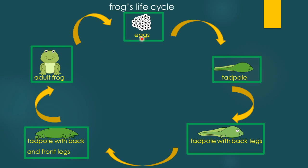So the first stage is egg, the second stage is tadpole, the third stage is tadpole with back legs, stage four is tadpole with back and front legs, and the last stage is adult frog.